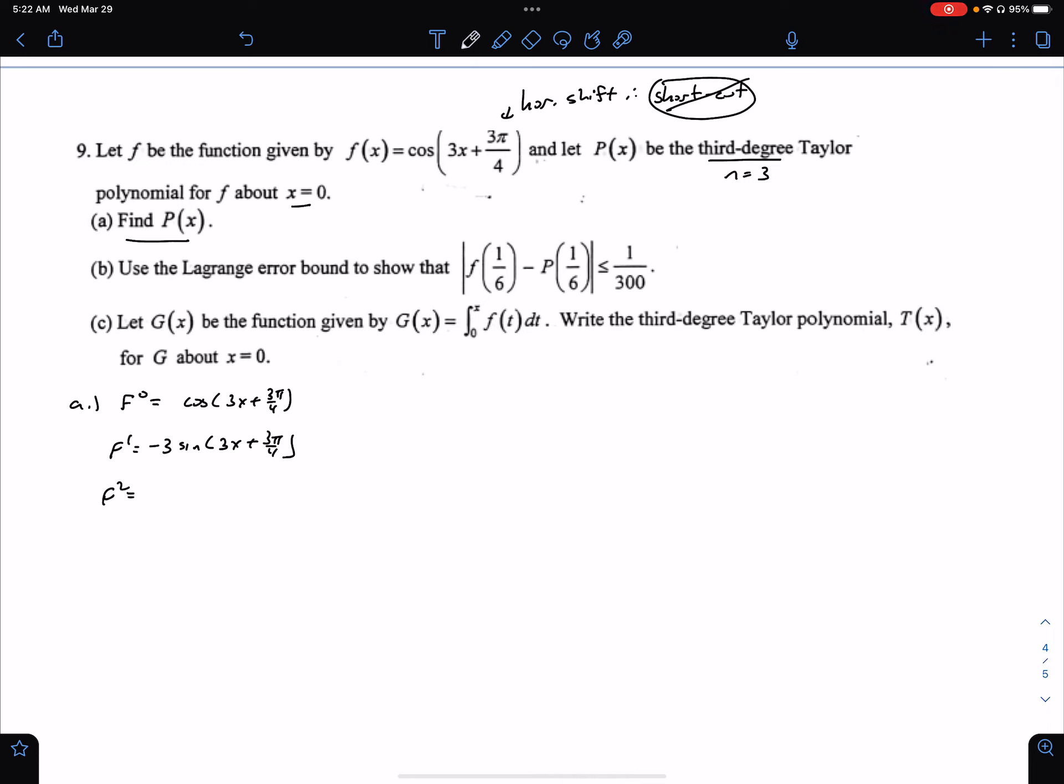The value of our second derivative, negative 9 cosine(3x + 3π/4). And the value of our third derivative, we'll stop here, positive 27 sine(3x + 3π/4).